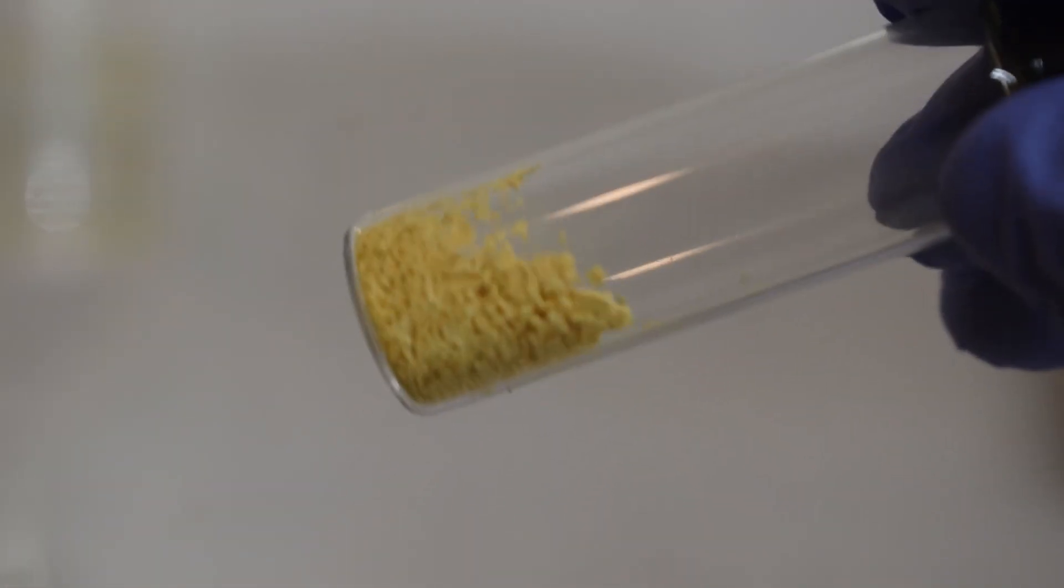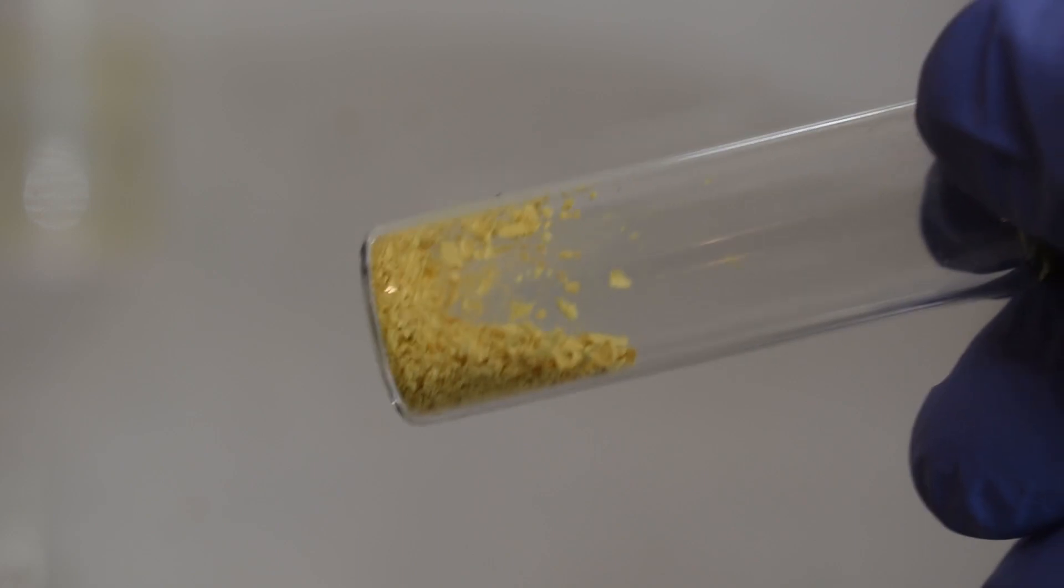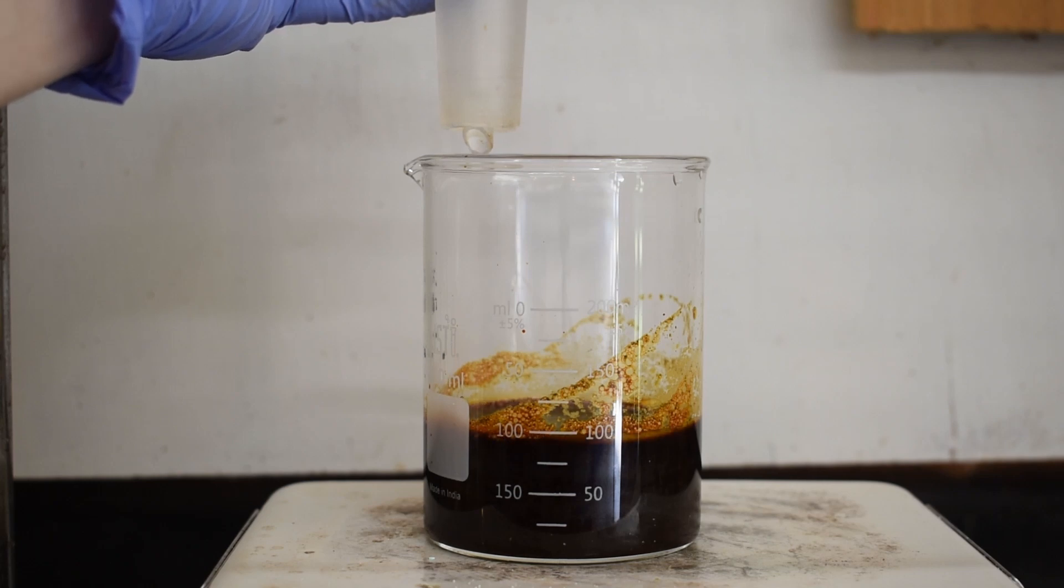In today's video I'll be making iodoform starting from potassium iodide. Iodoform is the iodine analog of chloroform and bromoform, however its properties are a bit different. Unlike the other two, it's a solid at room temperature and forms bright yellow crystals.